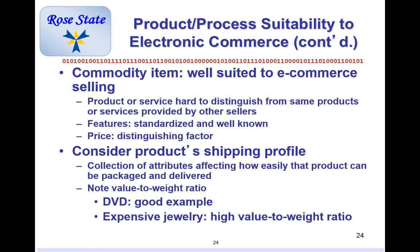Let's talk about product sustainability and commodities. What is a commodity item well suited for the internet? Downloads. Think about Amazon, Netflix, Hulu Plus. What about shipping profiles — how quick is it going to be that a package can get to you because of your zip code?